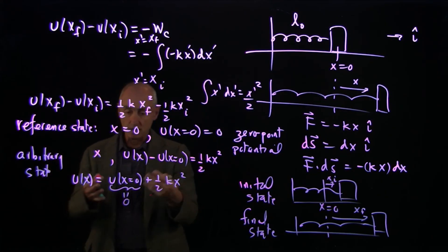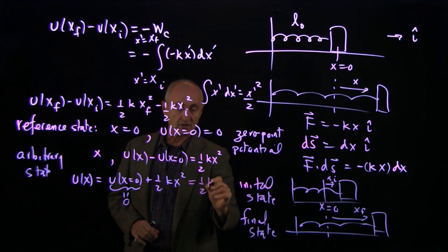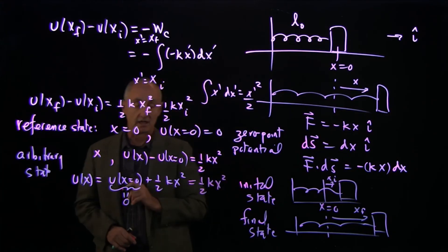It could have been anything, but we're making it 0 so that we get a nice function 1/2 k x squared.